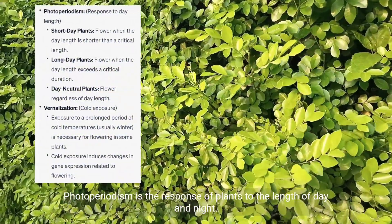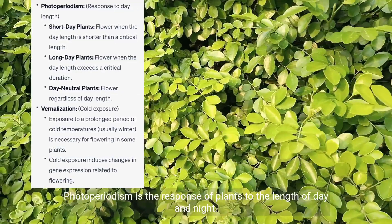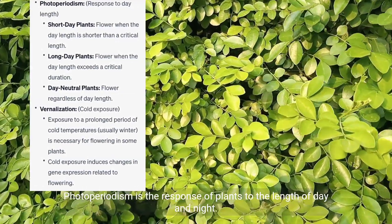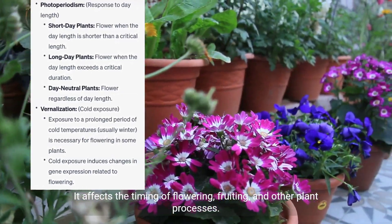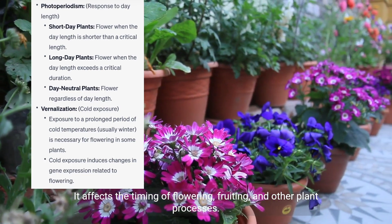Photoperiodism is the response of plants to the length of day and night. It affects the timing of flowering, fruiting, and other plant processes.